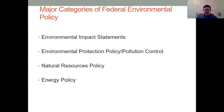Let's start with the major categories of federal environmental policy. We're going to examine four basic areas the government is involved in. One is something called an environmental impact statement. The second is environmental protection policy and pollution control — a series of acts that Congress enacted predominantly in the late 60s and early 1970s. Third is natural resources policy, and finally energy policy, or what we'll see is more or less a lack of an energy policy.